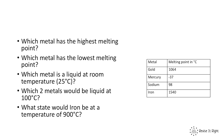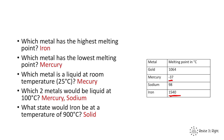Let's go through the answers. For question one, which metal has the highest boiling point? You should have had iron at 1,540. Which metal has the lowest melting point? It should have been mercury with minus 37. Which metal is a liquid at room temperature? It is mercury — its melting point is minus 37, so it will be a liquid at room temperature because it's not hot enough to boil but not cool enough to freeze. Which two metals would be liquid at 100 degrees? That would be sodium and mercury. And finally, which state would iron be at a temperature of 900 degrees? It would be a solid.